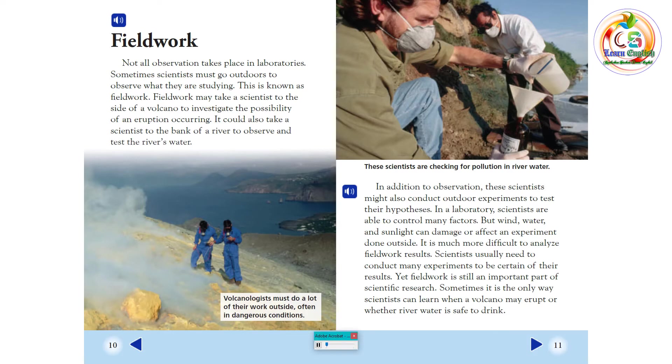In addition to observation, these scientists might also conduct outdoor experiments to test their hypotheses. In a laboratory, scientists are able to control many factors, but wind, water, and sunlight can damage or affect an experiment done outside. It is much more difficult to analyze fieldwork results. Scientists usually need to conduct many experiments to be certain of their results. Yet fieldwork is still an important part of scientific research. Sometimes, it is the only way scientists can learn when a volcano may erupt or whether river water is safe to drink.